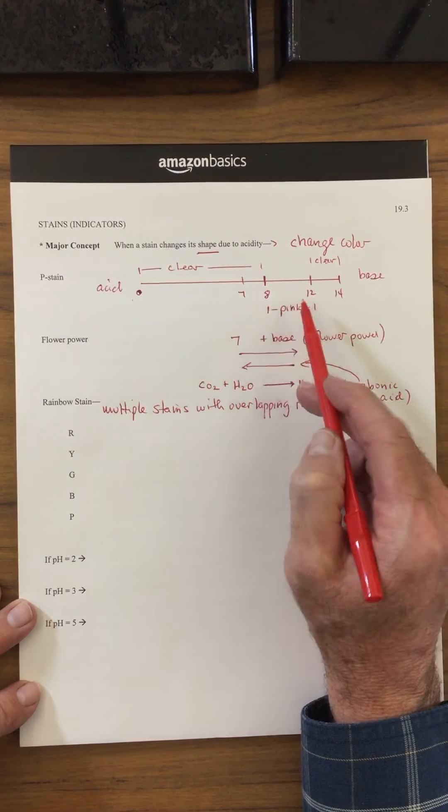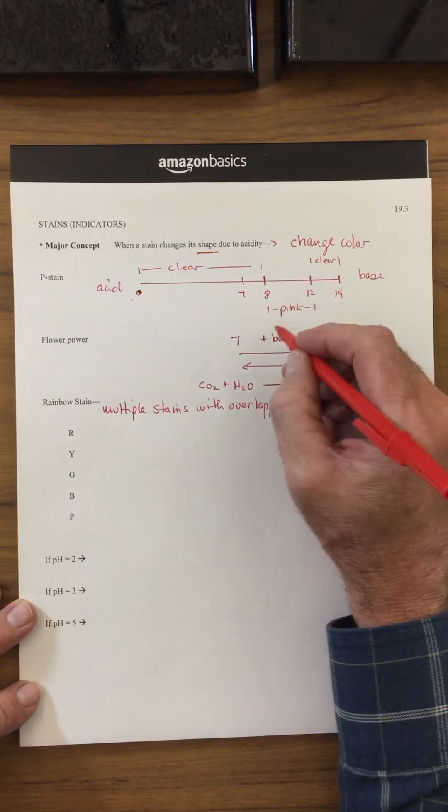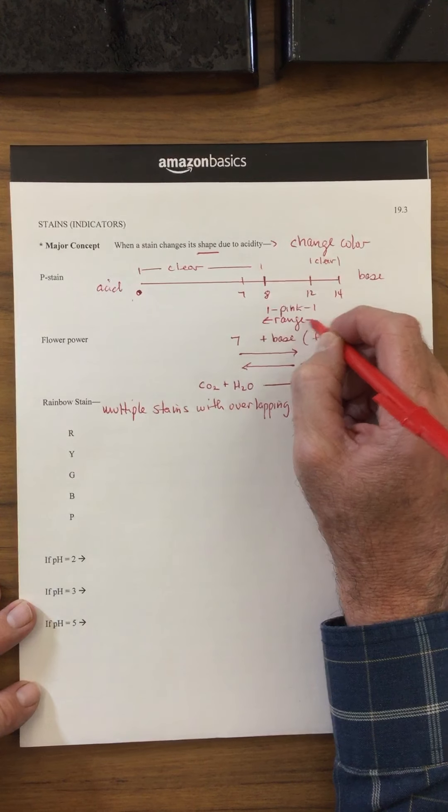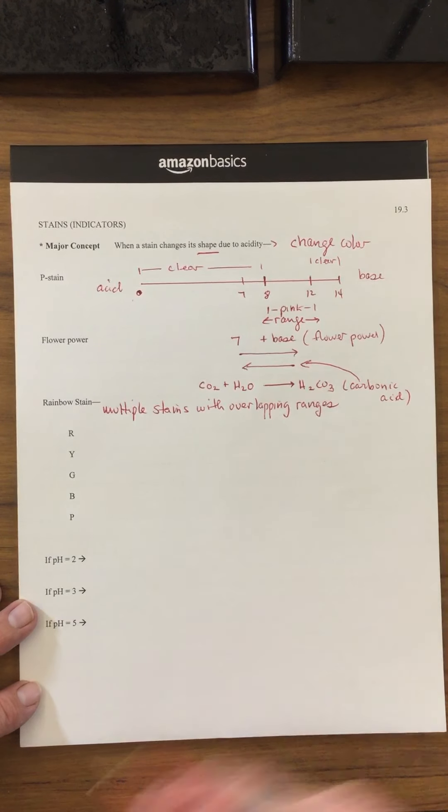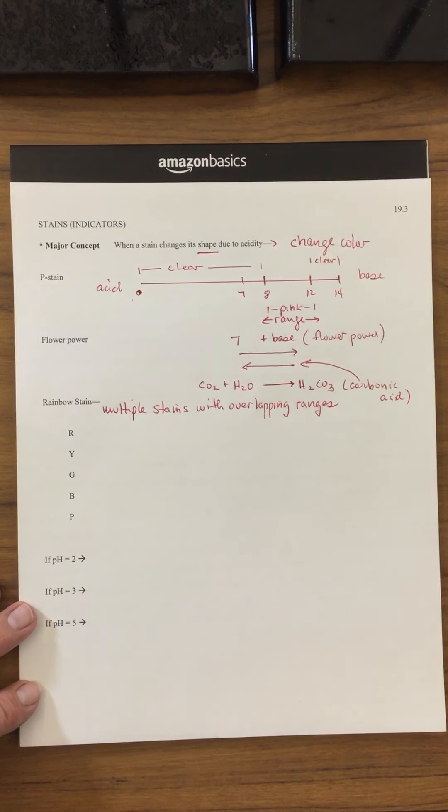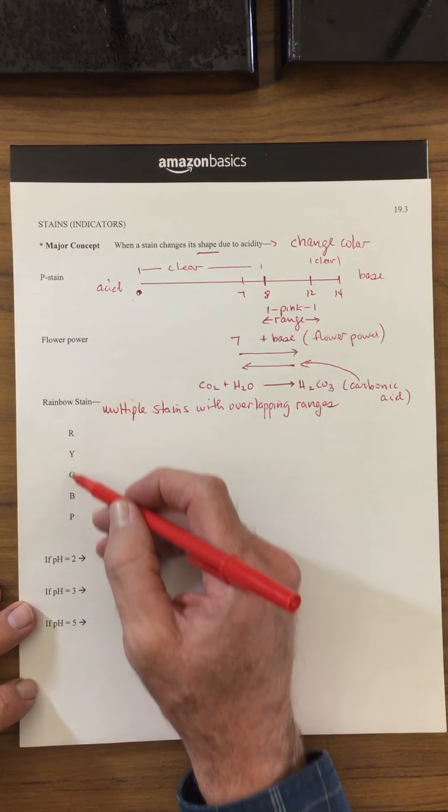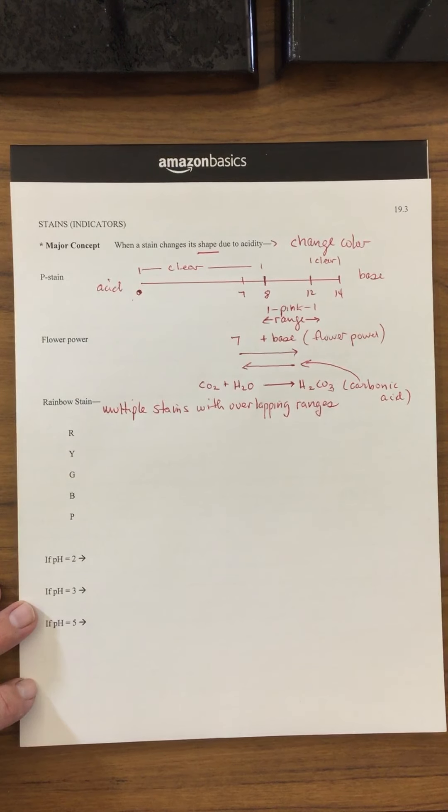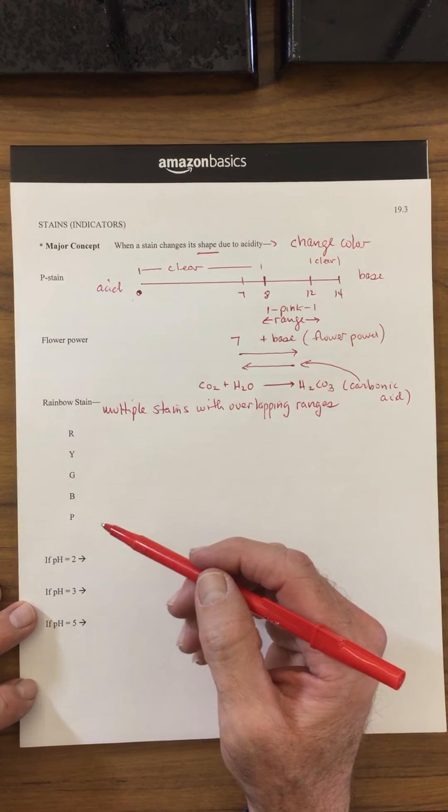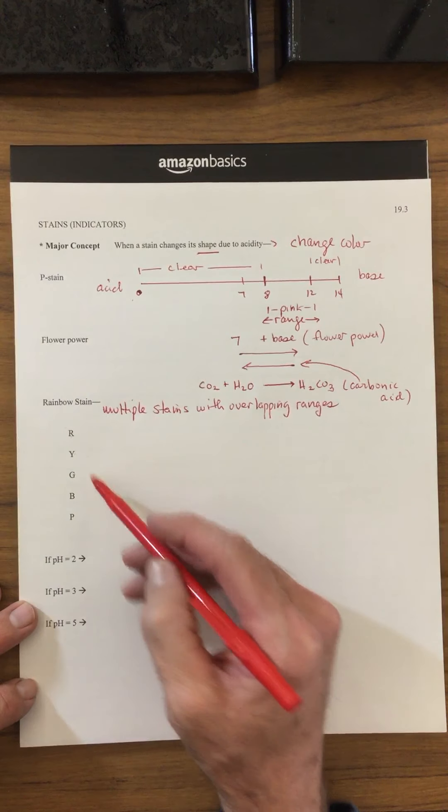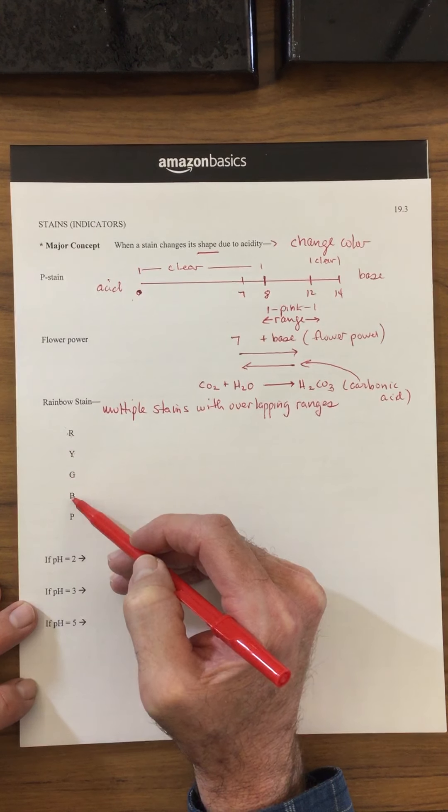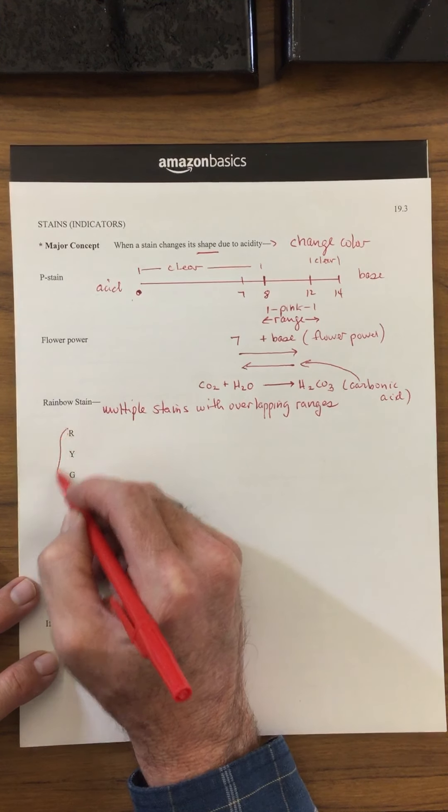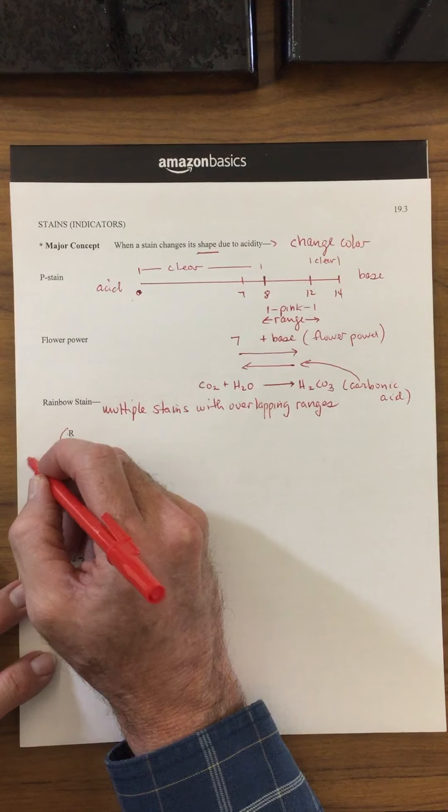So the range for the phenolphthalein was between 8 and 12—here is its range from here to here. Well, I'm going to come up with some numbers. These are some of the colors that we saw with the phenolphthalein: we saw a red, a yellow, a green, a blue, and a purple. Imagine that these stains exist—the red plus the yellow plus the green plus the blue plus the purple—they all add up to make the rainbow stain.